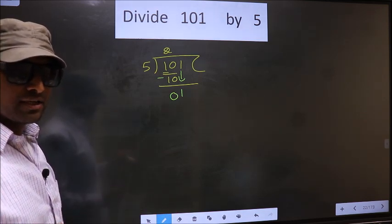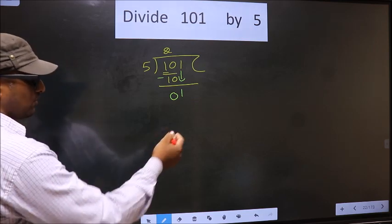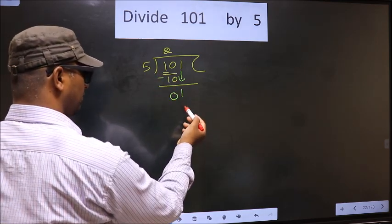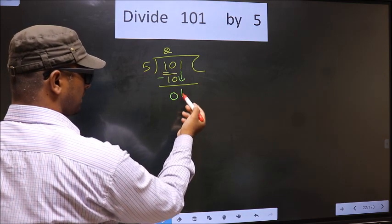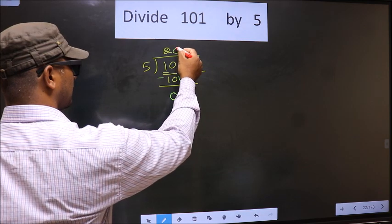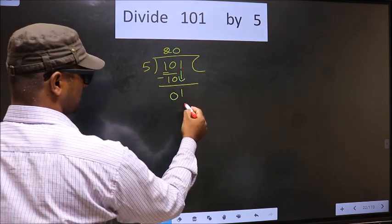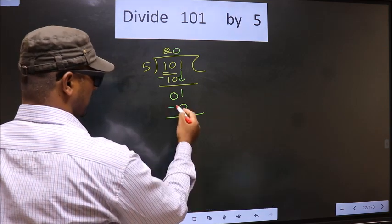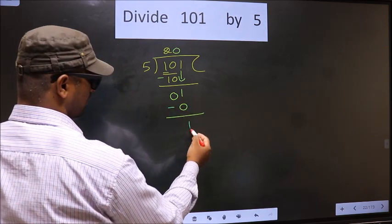Instead, what you should think of is: what number should we write here? If we write 5, that will be larger than 1. So what we do is we take 0 here. So 5 into 0 is 0. Now you subtract: 1 minus 0 is 1.